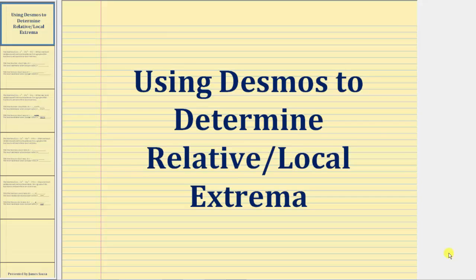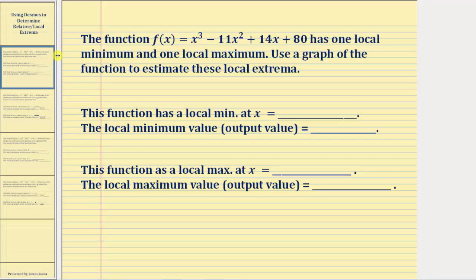Welcome to a lesson on how to use the Desmos grapher at desmos.com to determine relative or local extrema of a cubic function. The function f(x) = x³ - 11x² + 14x + 80 has one local minimum and one local maximum. We're asked to use a graph of the function to estimate the local extrema.